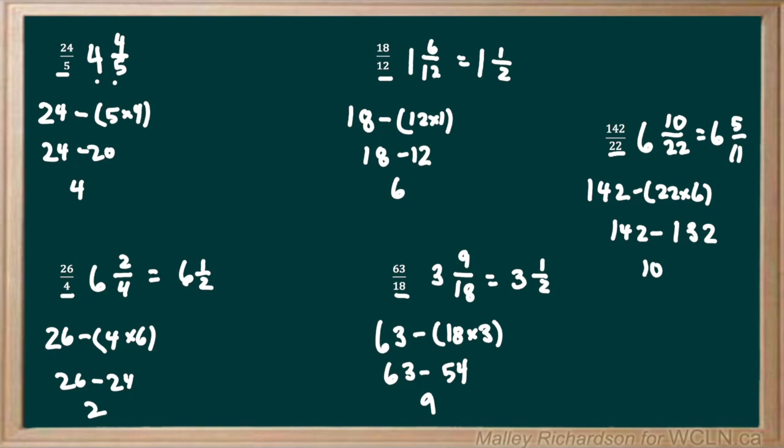You can check all of these answers by taking the denominator, multiplying it by the whole number, and then adding on the numerator to see if you get the same answer as your original question.